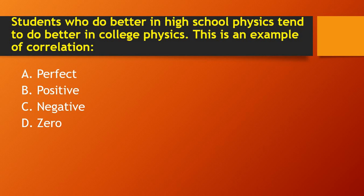Next question: students who do better in high school physics tend to do better in college physics. This is an example of — perfect correlation, positive correlation, negative correlation, or zero correlation? Since students who perform well in high school physics also tend to perform better in college physics, it is positive correlation.